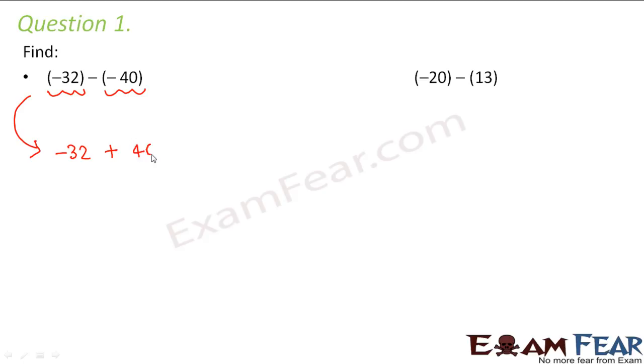So subtracting minus 40 is same as adding the additive inverse of minus 40. So additive inverse of minus 40 would be plus 40. Now adding a positive integer and a negative integer, what is the tip? Find the difference.